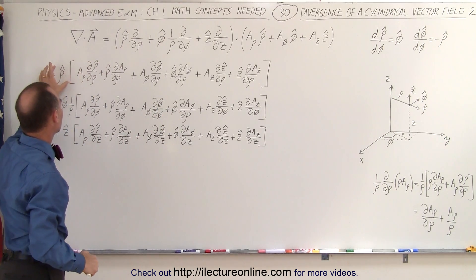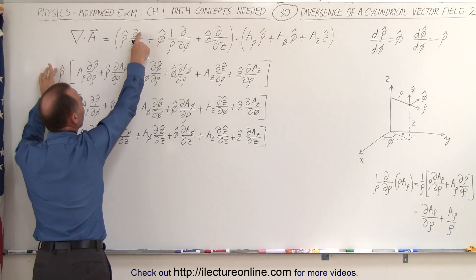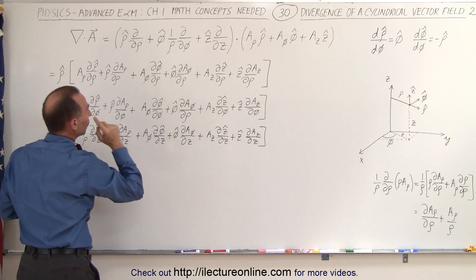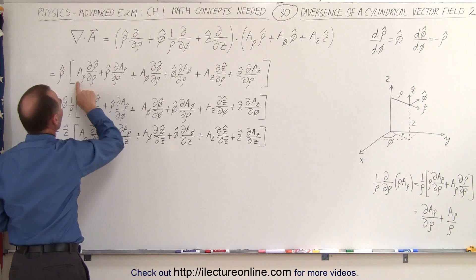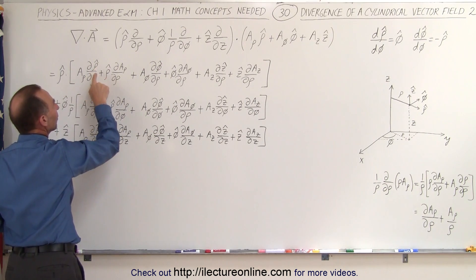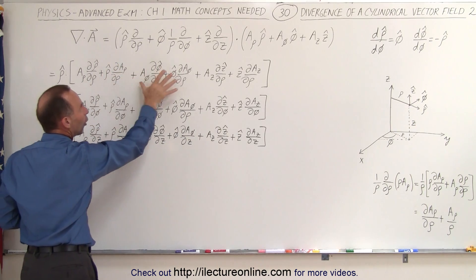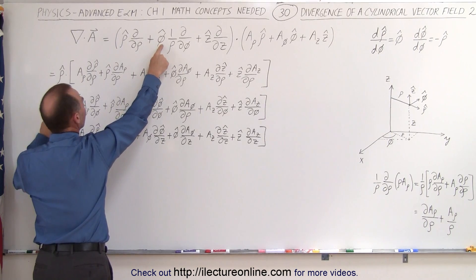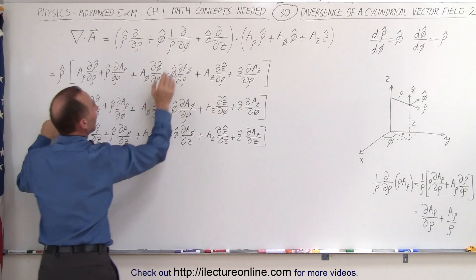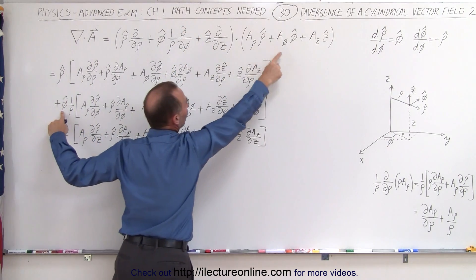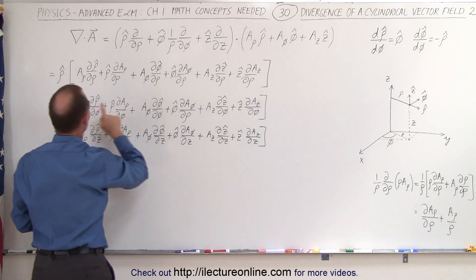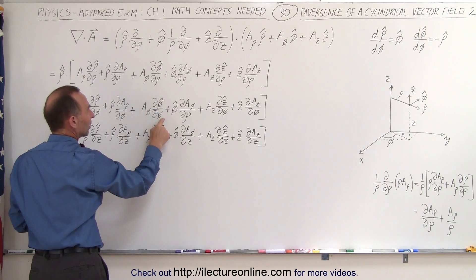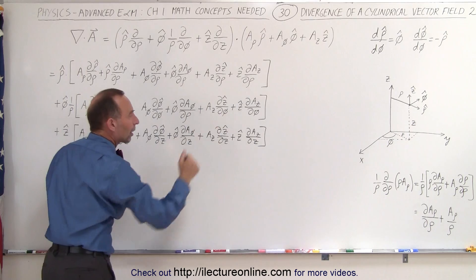We took the rho unit vector outside, and now we're going to take the partial derivative with respect to rho of those three terms, ending up with these first terms. Notice that each of these are products, so we take the first times the derivative of the second, plus the second times the derivative of the first — and we do that for all three terms. We do it again for the second set, with the phi unit vector and one-over-rho taken out, and apply the product rule all the way through.